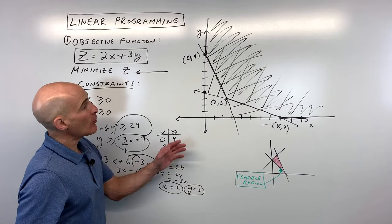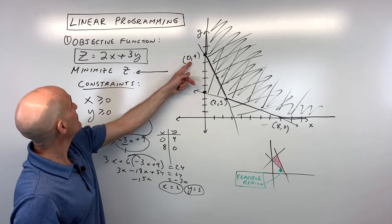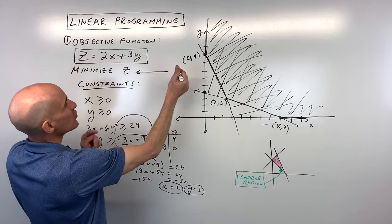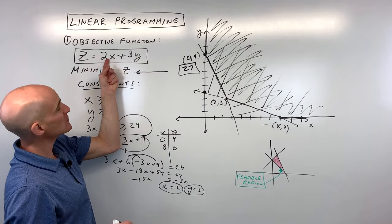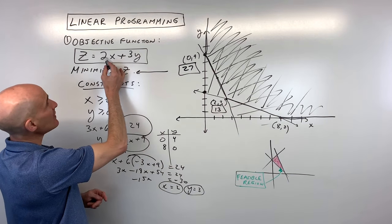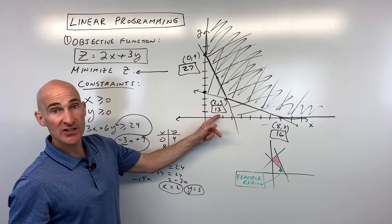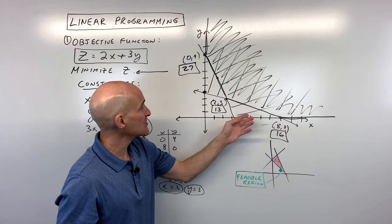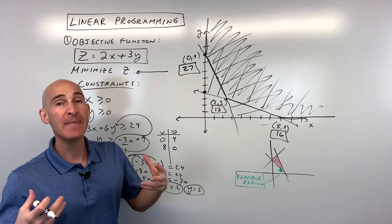Now we plug these vertices into our objective function z = 2x + 3y to find the minimum. For (0, 9): 2(0) + 3(9) = 27. For (2, 3): 2(2) + 3(3) = 4 + 9 = 13. For (8, 0): 2(8) + 3(0) = 16. The minimum value is 13, at the point (2, 3). To minimize, you want 2 of x and 3 of y, giving a minimum value of 13. Now let's dive into a word problem where we maximize profit.